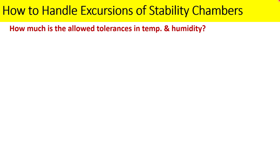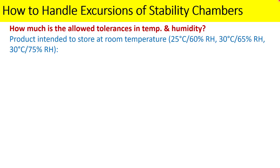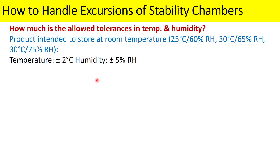Before discussing excursions, let us understand the allowable tolerances for temperature and humidity according to ICH and WHO. If your product is intended to be stored at room temperature and the long-term storage condition is 25°C/60%, 30°C/65%, or 30°C/75%, the allowable tolerance for temperature is ±2°C and for humidity it is ±5% RH. The same tolerances apply if 30°C/65% is your intermediate condition.